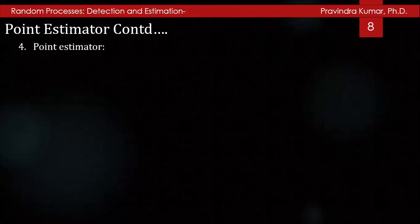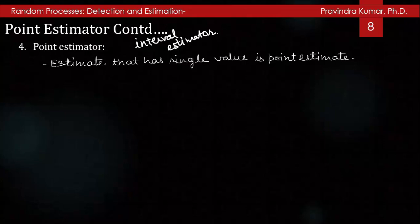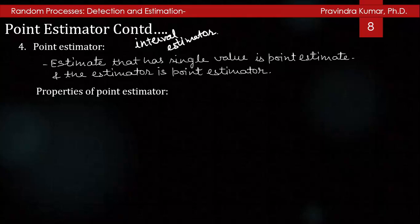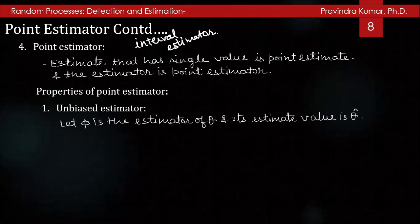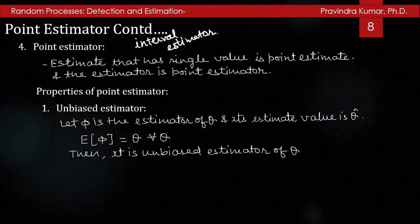It is not necessary that an estimate of a parameter is a single value. The estimate can be a range of values, known as an interval estimate, and the corresponding estimator is an interval estimator. An estimate that has a single value is known as a point estimate, and the corresponding estimator is a point estimator. The first property of a point estimator is the unbiased estimator: if E[φ] = θ for all θ, then φ is an unbiased estimator of θ.